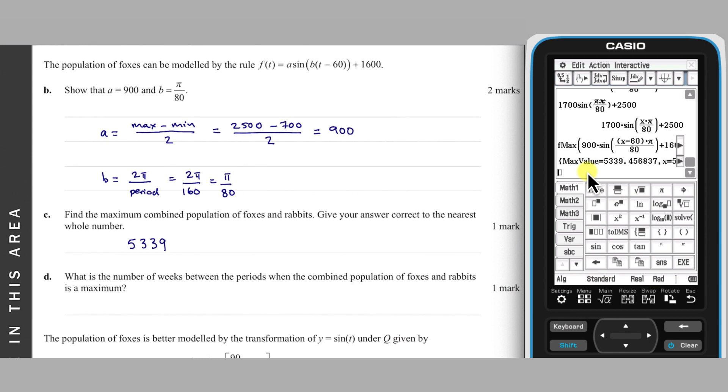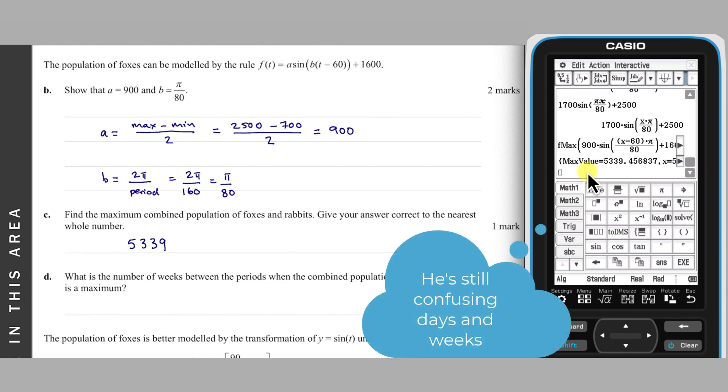Part D: As mentioned in part C, the two single functions have a period of 160 days, so the combined population will have the same period, and so the number of weeks between maximums will be 160.